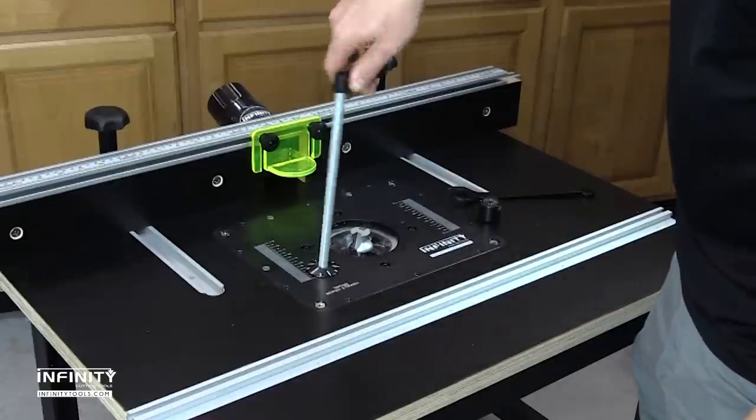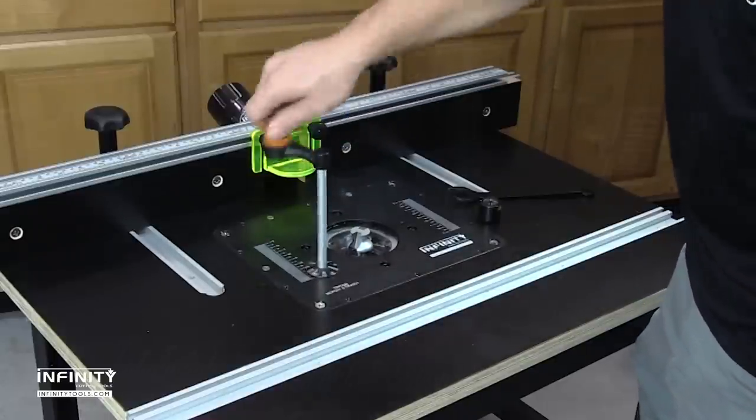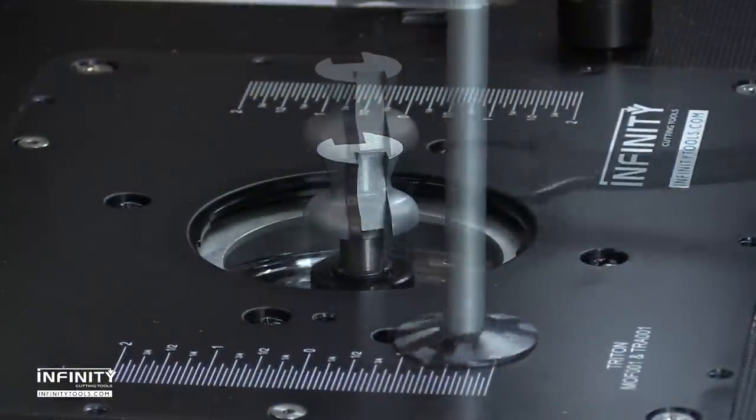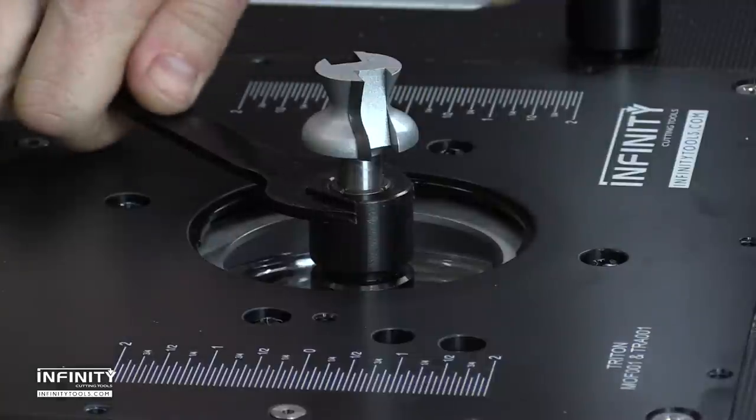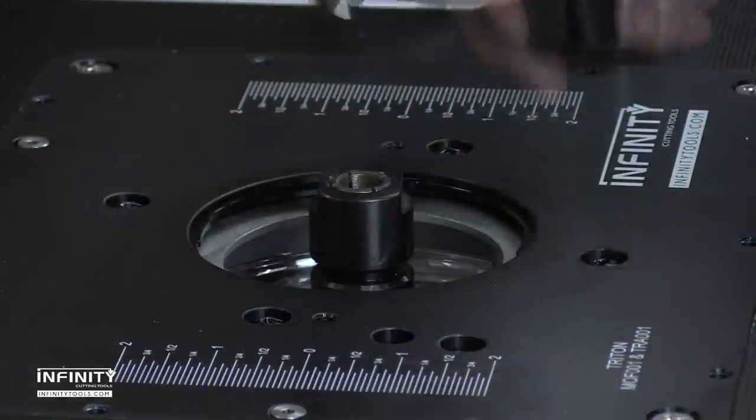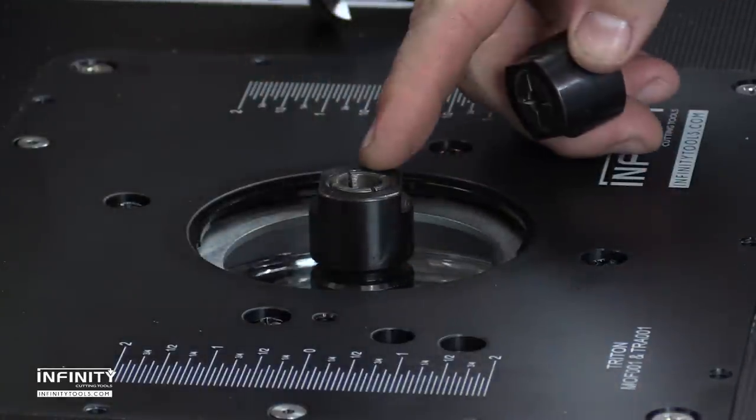The included crank arm slides through a hole in the Infinity Plate for above-table bit height adjustments. The router also has a built-in collet lock that allows for one wrench bit changes above the table's surface, and the router includes both quarter-inch and half-inch collets.